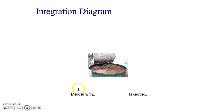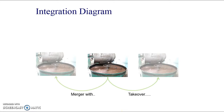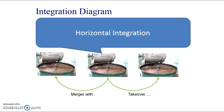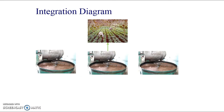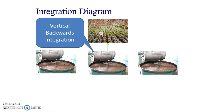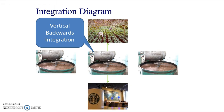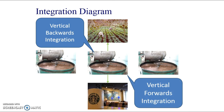Here's a diagram using a coffee roasting facility as an example. If they merged with or took over other coffee roasting facilities, that would be horizontal integration - taking over competitors at the same stage of production in the same industry. If this firm takes over their supplier - people harvesting coffee - that would be vertical backward integration. If they take over their customer, such as coffee shops or cafes - say Starbucks - that would be vertical forward integration. Horizontal means buying competitors; vertical means buying your supplier or your customer.